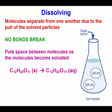When molecules are dissolved, we're separating them from one another due to the pull of the solvent particles. No bonds are going to break, and the molecules are going to stay together. They will not break apart into ions. We're just putting space between the molecules as they become solvated. Solvated means dissolved.